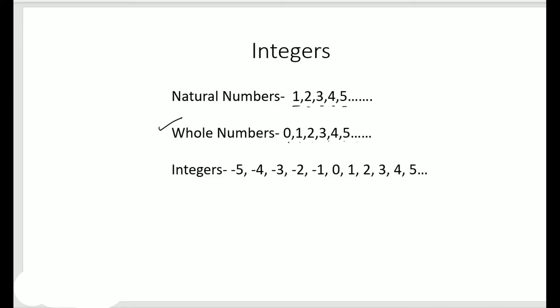If we add negative numbers to this set of whole numbers — so minus five, minus four, minus three, minus two, minus one — and then our whole number set: zero, one, two, three, four, five — this entire set becomes our integers. So natural numbers start from one, whole numbers start from zero, and integers include all negative numbers, zero, and our positive numbers one, two, three.